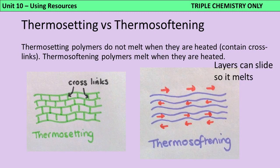Separately, you need to know about thermosetting and thermosoftening polymers. Thermosetting polymers have cross-links between the chains — a special kind of covalent bond — that stop the chains from moving past each other. If you heat them, they don't melt; they stay strong until they burn. Thermosoftening polymers don't have cross-links, so when you heat them they just melt, making them no good for high-temperature functions. In the exam, they might give you a scenario — like a frying pan handle — and you'd need to explain why a thermosoftening polymer would be unsuitable, because it would melt as the pan gets hot.